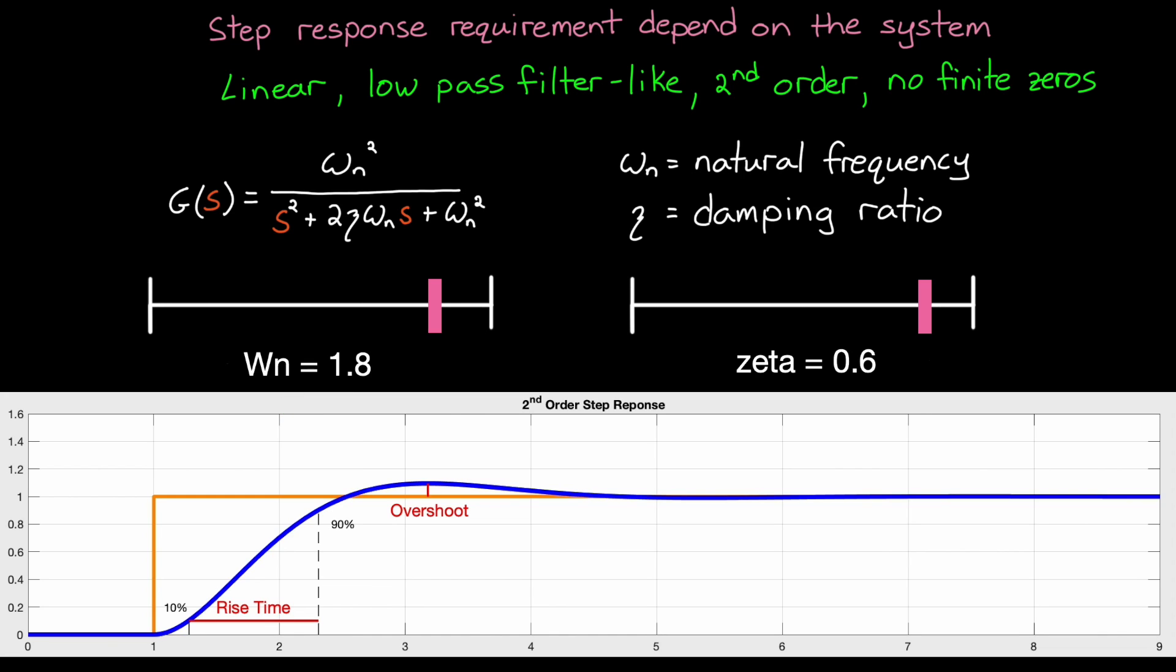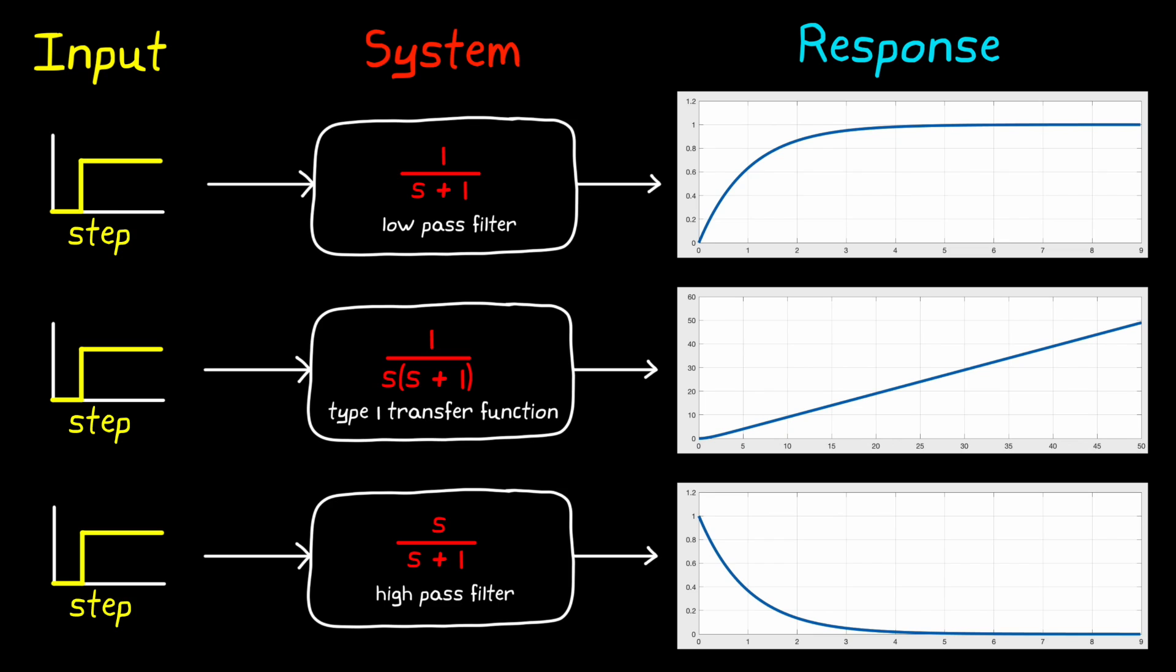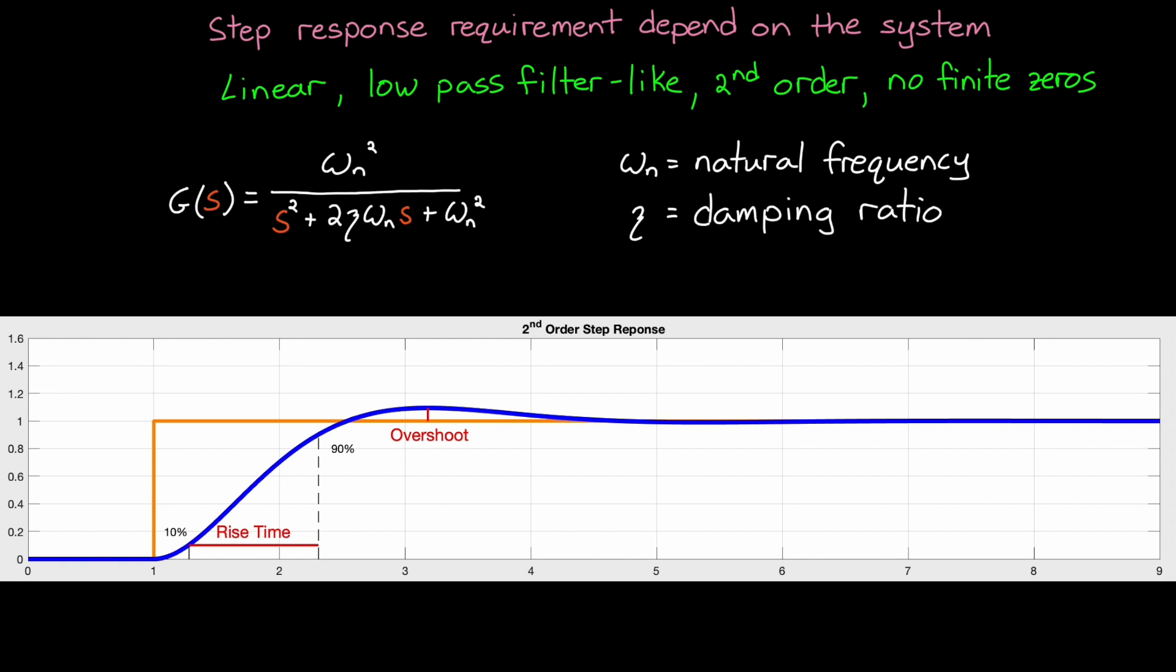And remember, this doesn't work for every system. Omega n and zeta are derived for a very specific second order transfer function. So just like you have to be aware of whether your system will act like a low pass or high pass filter before you set your step response requirements, you also need to make sure that you're not defining something like damping ratio for a system that can't be approximated by the standard second order transfer function. So just be careful to understand your system before you request a design requirement that just can't be met.